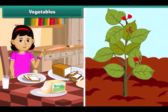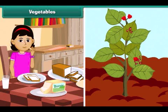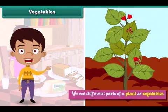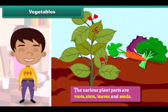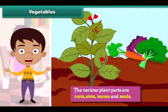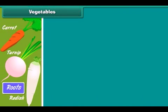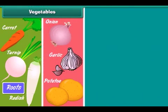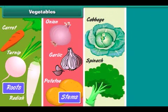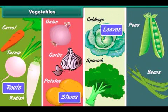We get our food from plants. The various parts of a plant are eaten as vegetables. The various plant parts are roots, stem, leaves and seeds. Carrots, turnips and radish are roots. Potatoes, onions and garlic are stems. Spinach and cabbage are leaves. Peas and beans are seeds.